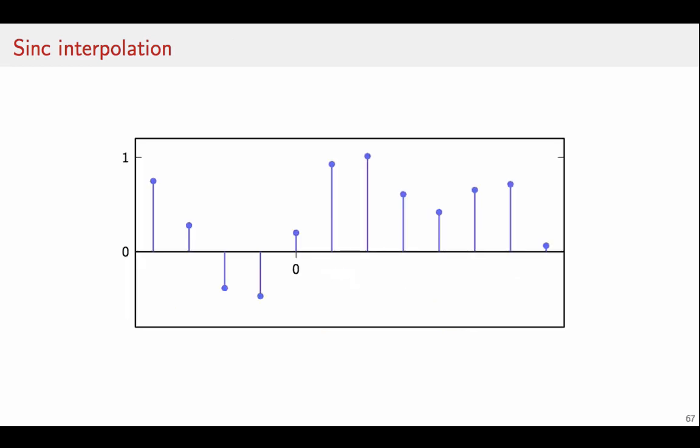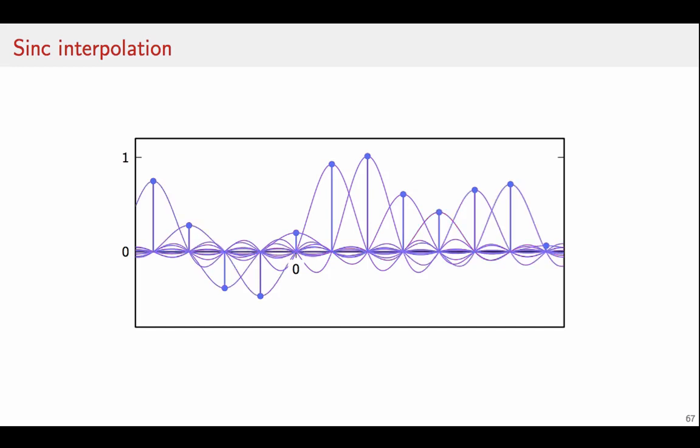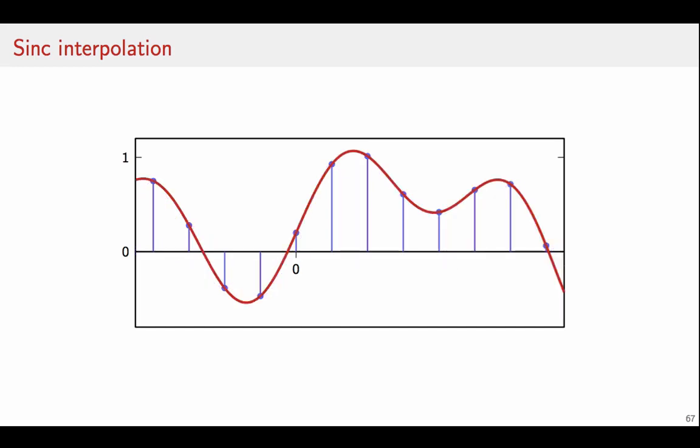In practice here is a portion of our dataset. We place a sinc function at each discrete time point, and you see that the sinc function naturally fulfills the interpolation property, namely it's equal to 1 at t=0, and it's equal to 0 at all other multiples of the interpolation interval. And when we sum all the sinc functions together, we obtain a maximally smooth interpolator for our data points.